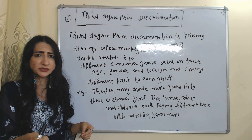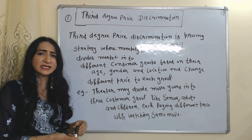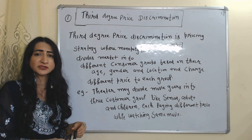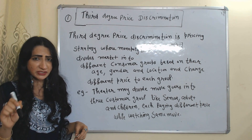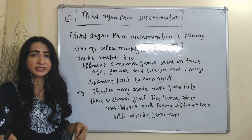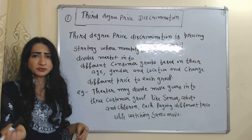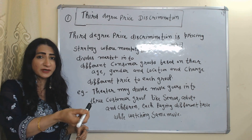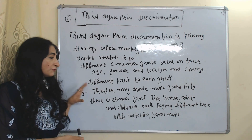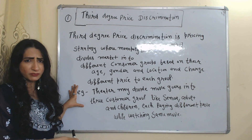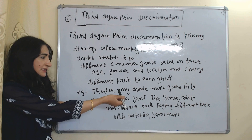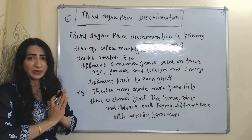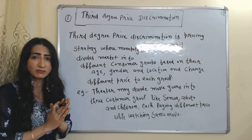Third degree price discrimination is a pricing strategy where a monopoly divides the market into different customer groups based on their age, gender, and location, and charges a different price from each group. For example, a theater may divide moviegoers into three customer groups — seniors, adults, and children — and each group pays a different price while watching the same movie.